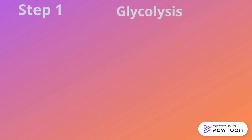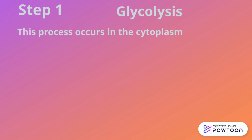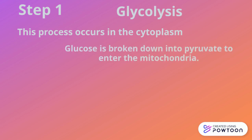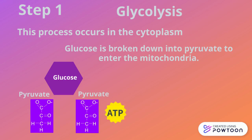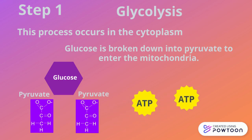The first step before cellular respiration begins is glycolysis. This occurs in the cytoplasm, and glucose is broken down into two pyruvate molecules that then enter the mitochondria, as glucose is too big to enter the mitochondria directly. It also produces two ATP.